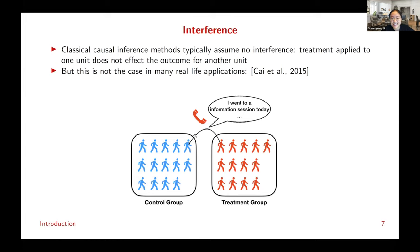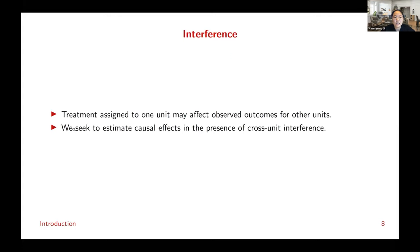Naturally, you would expect interference to exist because those two people could be friends. Even if one person didn't go to the information session, the other person went and could tell them all the benefits of the insurance. So formally, we say that the treatment of one person impacts the financial decision or outcome of another person. We call this interference: the treatment assigned to one unit affects the observed outcomes for other units.